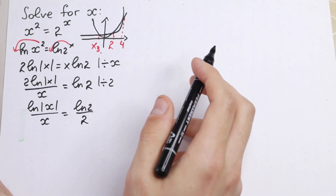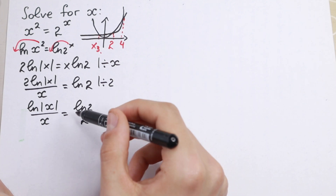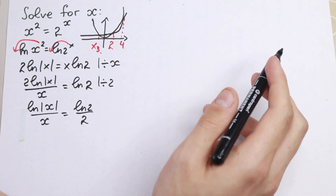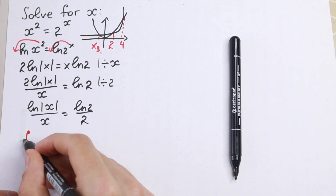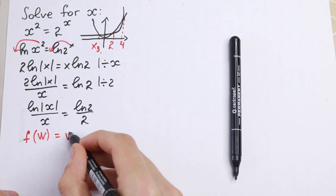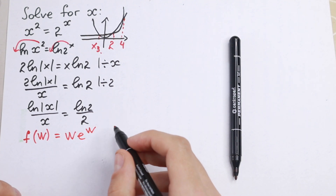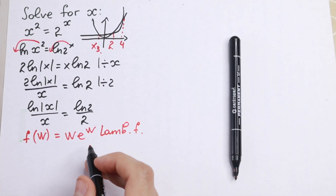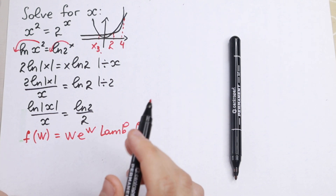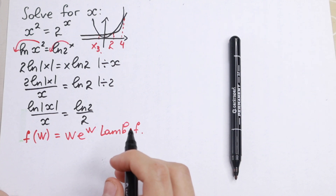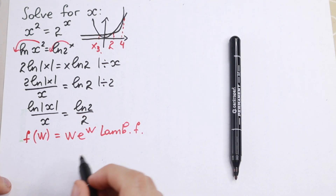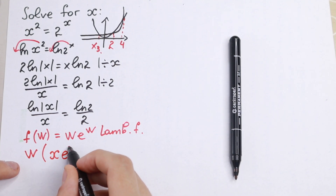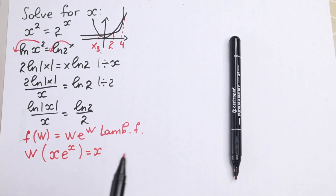This is really hard to simplify further because we now need to know about the Lambert W function. The Lambert W function is defined as: f(w) = w·e^w. This is a multi-valued function where w is any complex number and e^w is the exponential function. It's really useful because if we apply W to an expression of the form x·e^x, we get back only x.